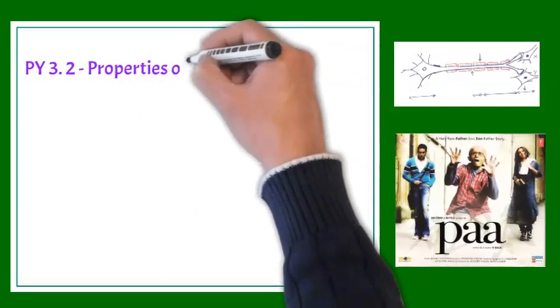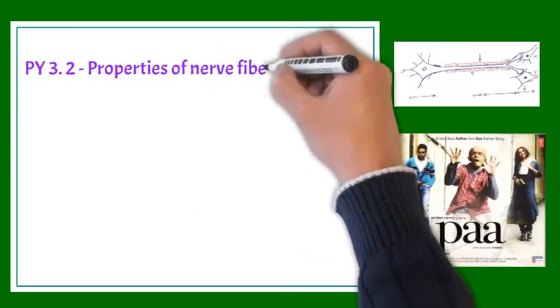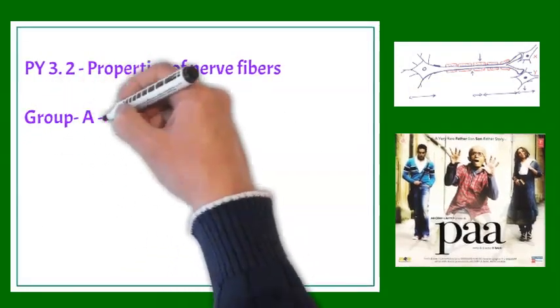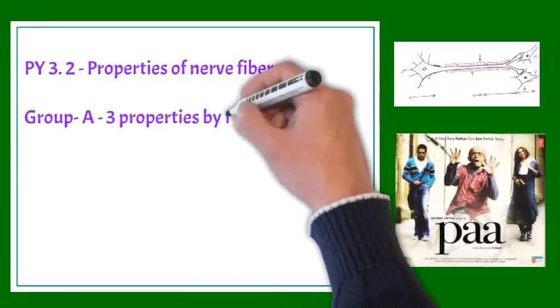Namaskar friends. Here is competency number PY3.2, properties of nerve fiber or neuron. We can do like this. We can make three groups: Group A, B, and C.